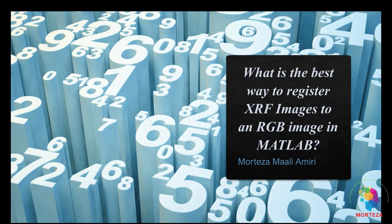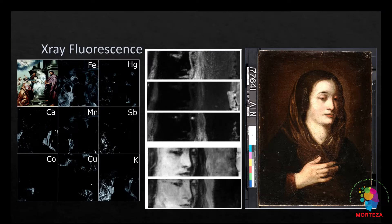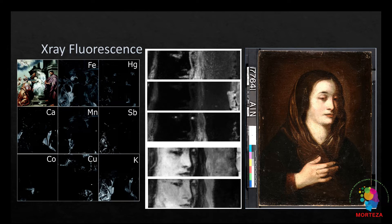Let's talk about the best way to register XRF images to an RGB image in MATLAB. X-ray fluorescence is widely used nowadays for the detection of different elements present in the material under study. We are going to be focused on XRF imaging which is used in artwork analysis to identify different elements present in the artwork, which helps authenticate it. XRF imaging also has some resemblance to multi-spectral imaging, as the output is a set of images where each channel contains information on where a particular element is present.